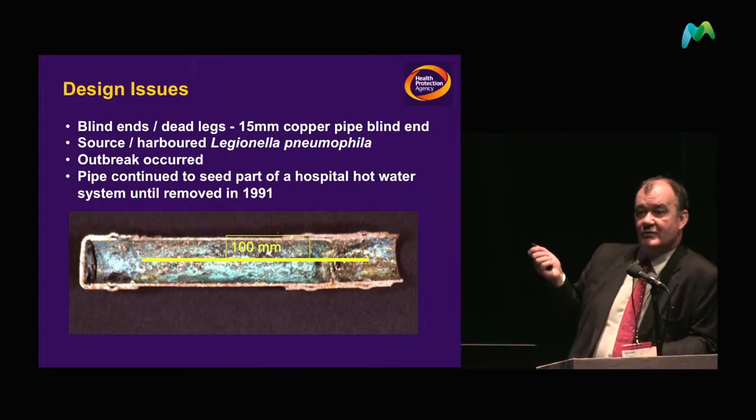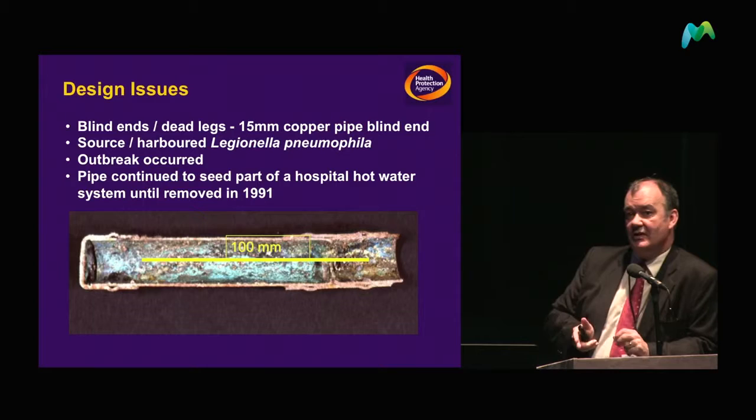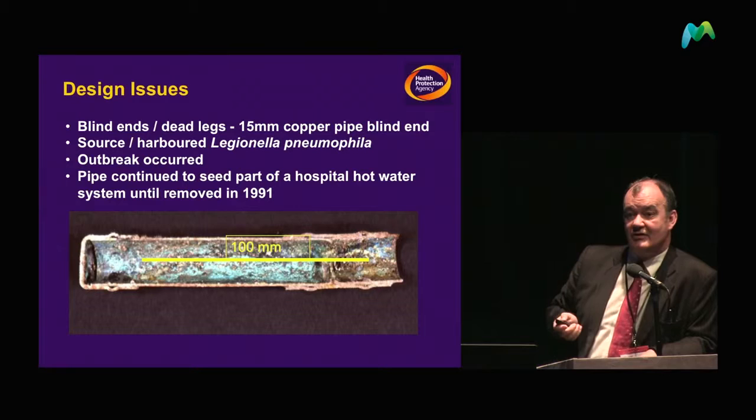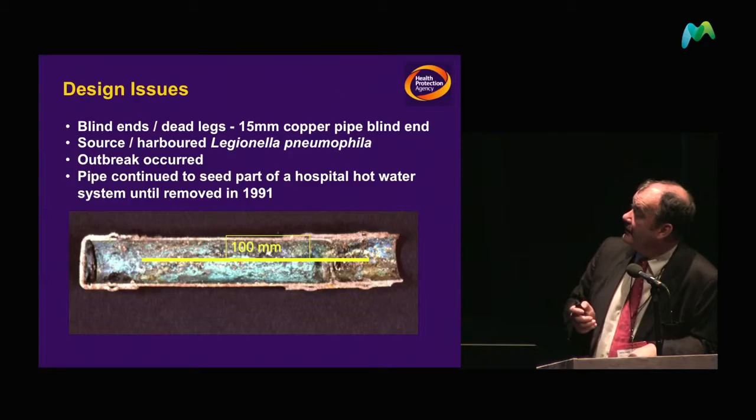The length of piping was 110 centimetres long — actually just a 150-millimetre length of piping buried in the wall was the problem they had for a number of years. Until that was removed they had Legionella problems, and once it was removed it went away.